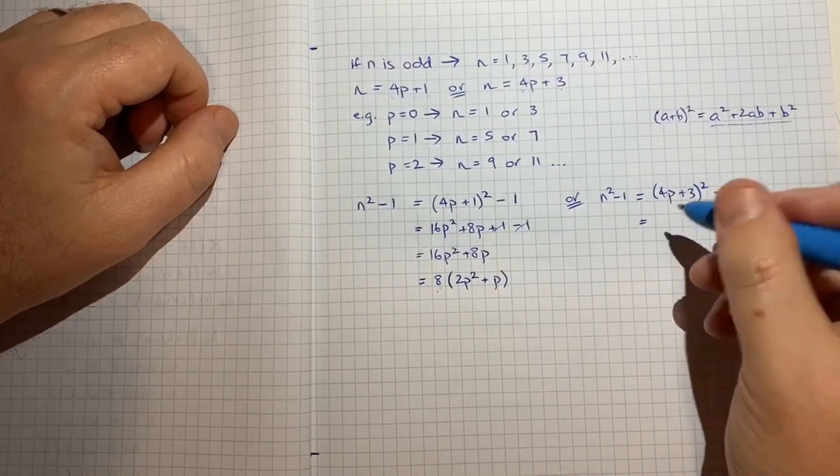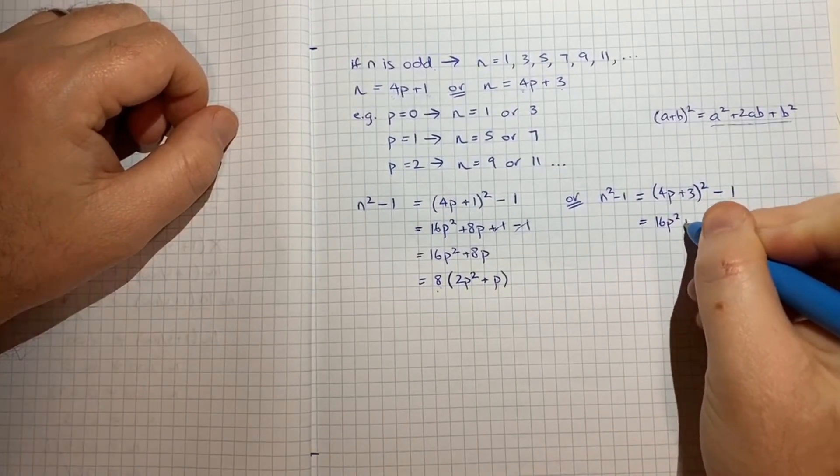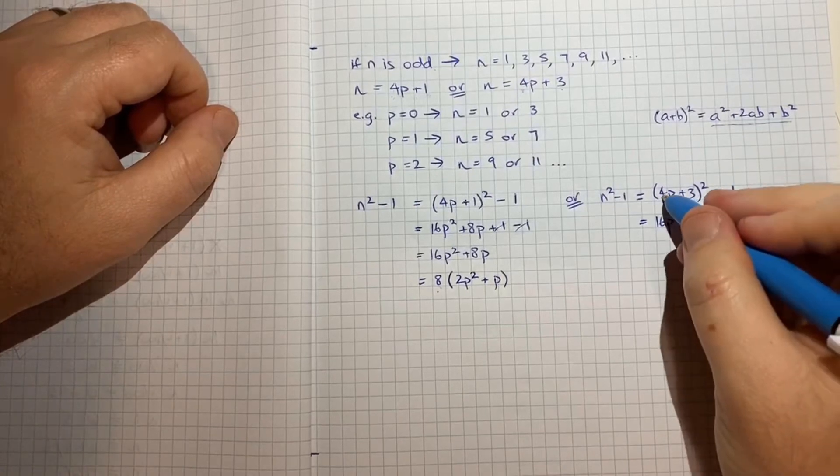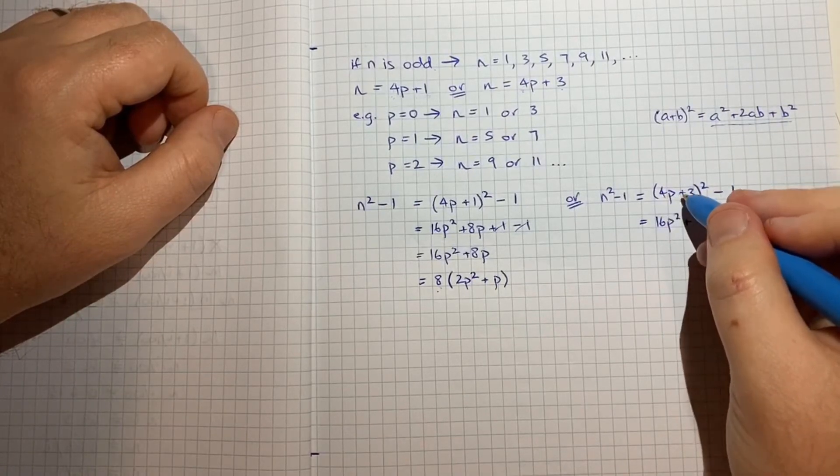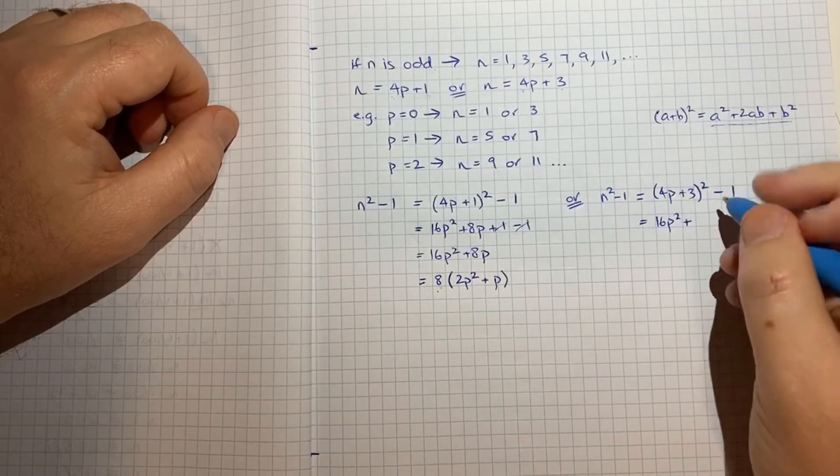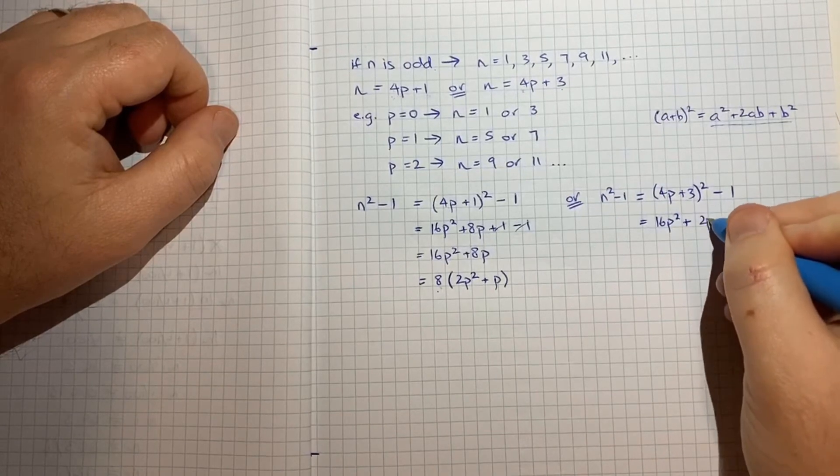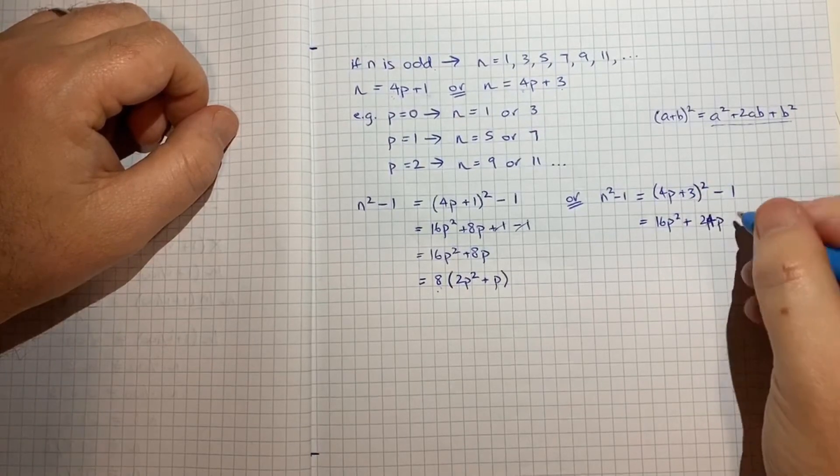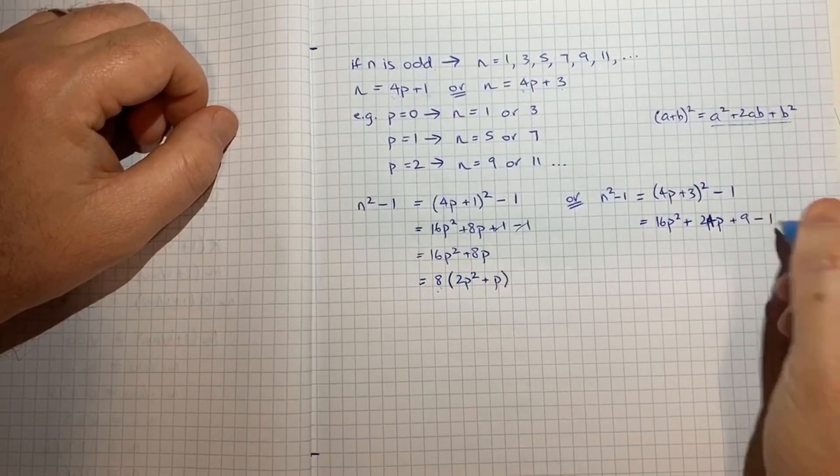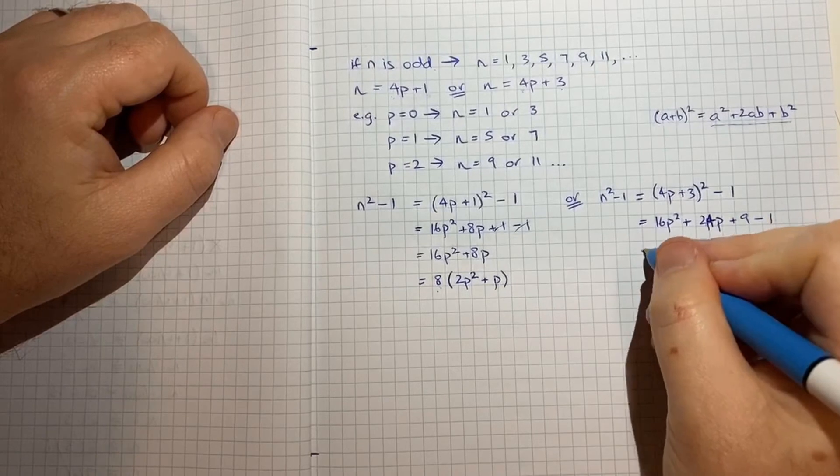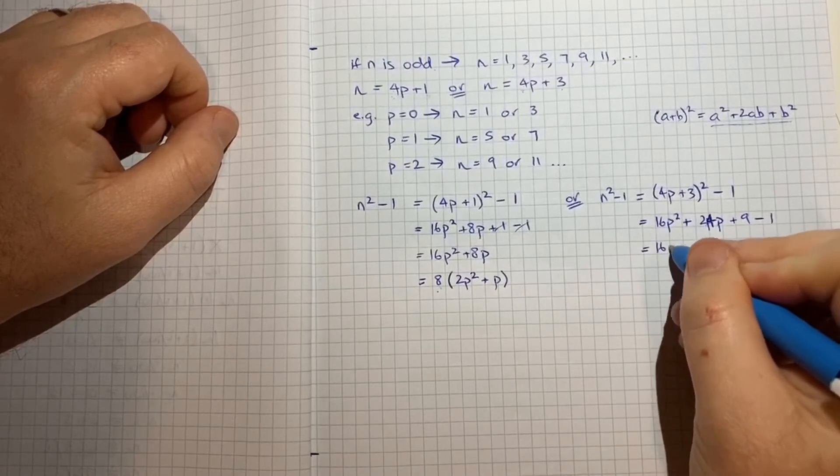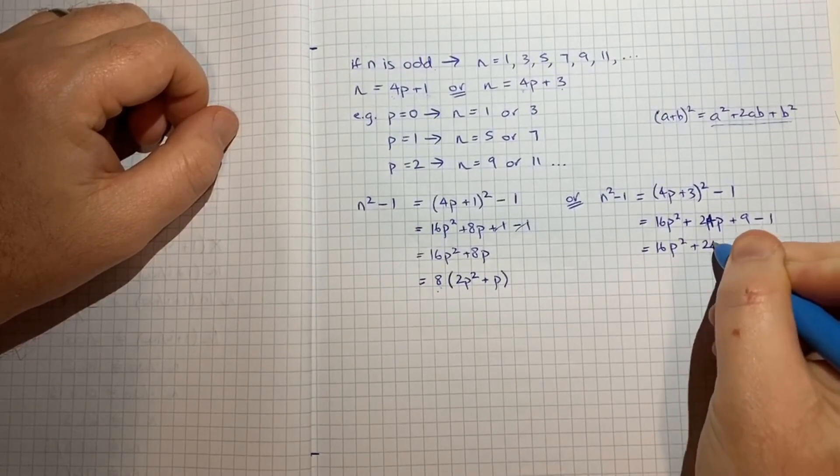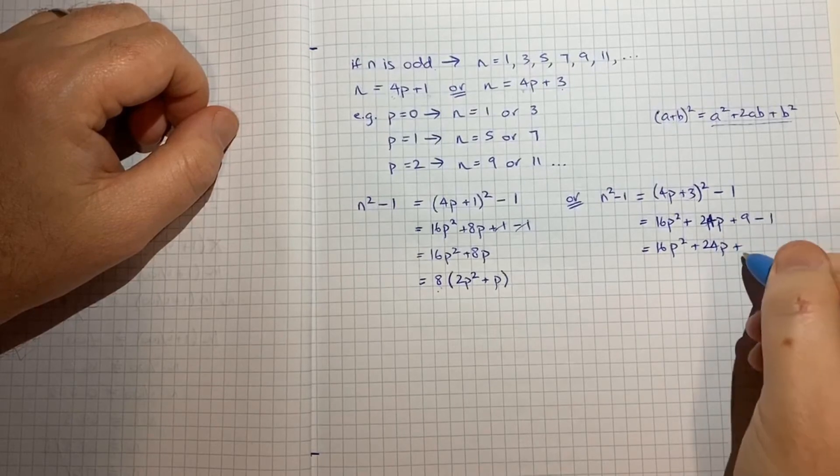And I'll expand that in the same way so we'll get 16p squared plus 2 times 4p times 3 will give us 24p and then 3 squared is 9 minus 1. Which equals 16p squared plus 24p plus 9 minus 1 is 8.